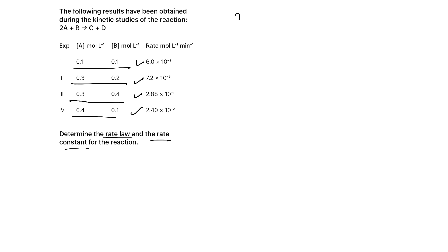First, we can write the rate law with unknown orders. R is equal to K, concentration of A raised to X, concentration of B raised to Y. For completing the rate law, we must know K, that is the rate constant, and also X and Y.